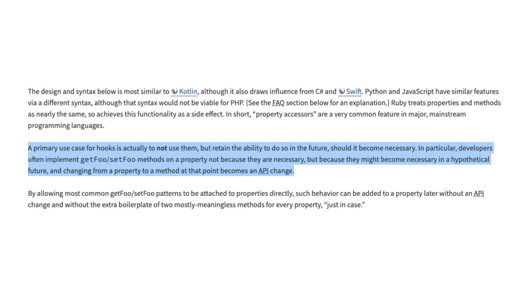This section from the RFC helps illustrate the use case for property hooks. It says: a primary use case for hooks is actually to not use them, but retain the ability to do so in the future should it become necessary. In particular, developers often implement get foo and set foo methods on a property not because they're necessary, but because they might become necessary in the future.